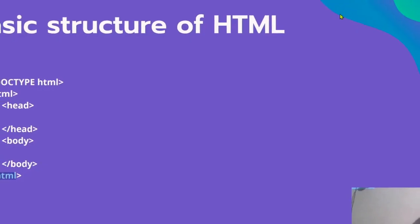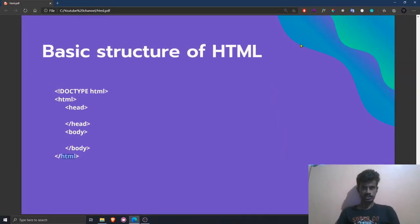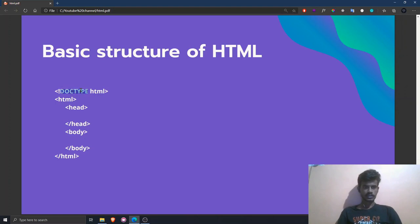Now let's see the basic structure of an HTML document. Before starting, you need to do some things so the browser understands you are writing HTML. The first line of code you need to write in any HTML file is the DOCTYPE declaration: `<!DOCTYPE html>`. This tells the browser you are writing an HTML file so it prepares its tools to compile HTML.